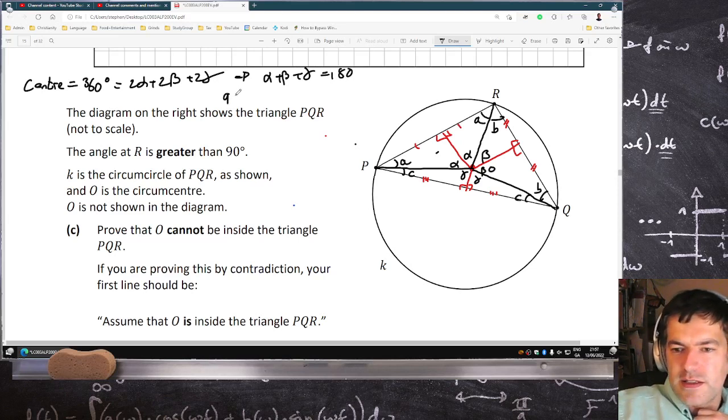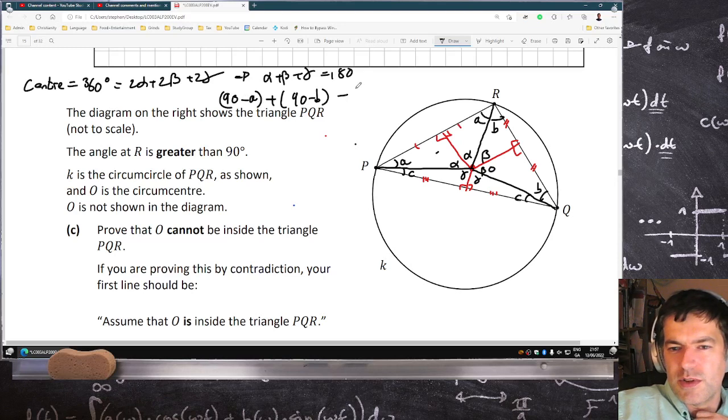And alpha is equal to 90 minus A, so 90 minus A plus 90 minus B plus 90 minus C, that has to equal 180.